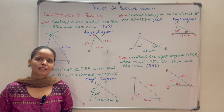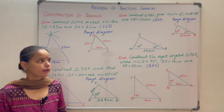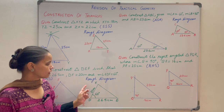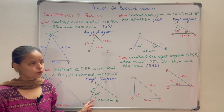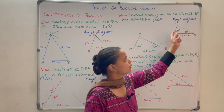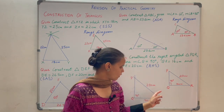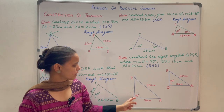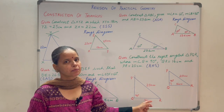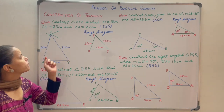Now let us see the construction of triangles. You can construct a triangle when: all three sides are given; two sides and the included angle are given; two angles and the side included between them are given; or, for a right triangle, one of the legs and the hypotenuse are given. Let us take these constructions one by one.